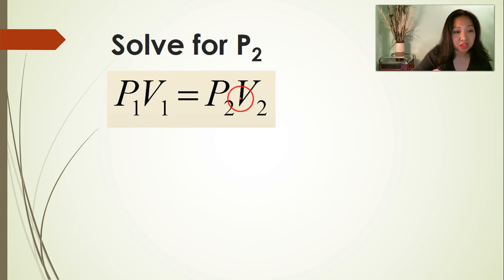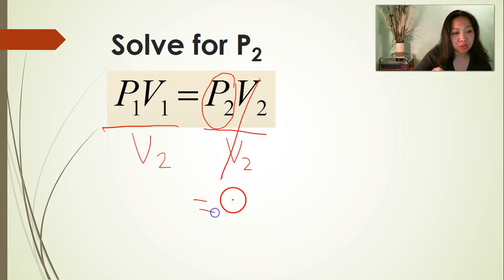Solve for P2, or the final pressure. Divide both sides of the equation by V2. Cancel V2. That should leave us with P2 equals P1 V1 divided by V2.